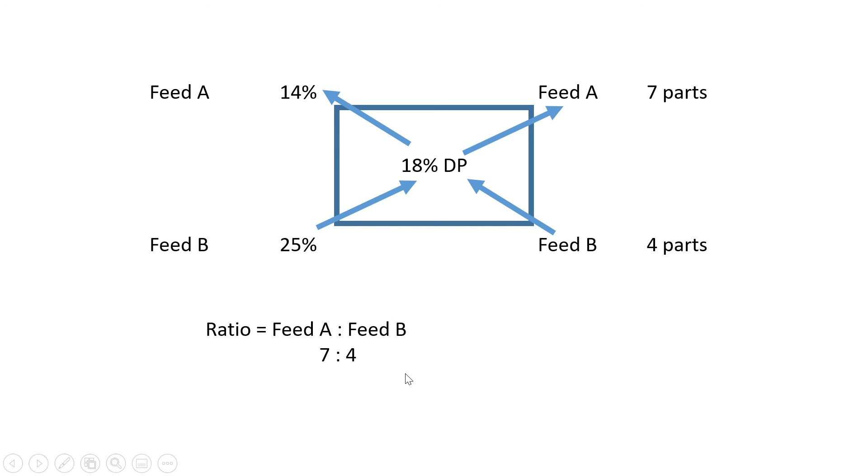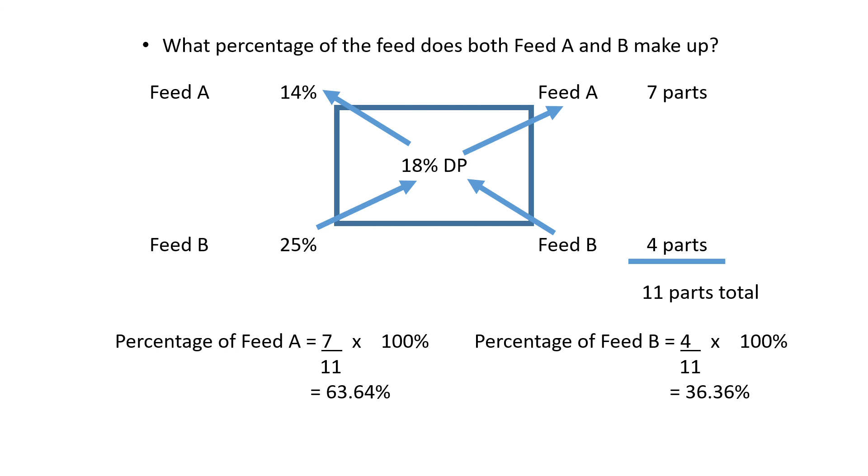I want to show what happens if they ask something additionally. They can ask what percentage of the feed does both Feed A and Feed B make up. You still have your square—nothing changed except now we've got the totals of the parts. Seven plus four gives you 11 parts.